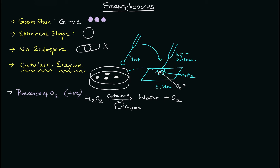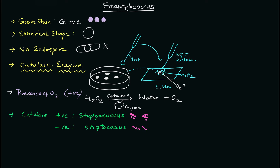Now if you have two different types of organisms, for example Streptococcus and Staphylococcus: the catalase positive organism will be Staphylococcus, and catalase negative will be Streptococcus. Further, if you do gram staining, if the organisms are arranged in a cluster of grapes, that will be Staphylococcus, and if they are arranged in a chain-shaped structure, that will be Streptococcus. So cluster of grapes is the important distinct feature of this particular genus.